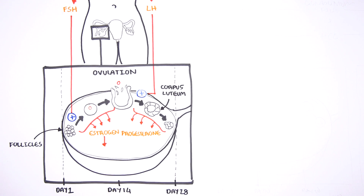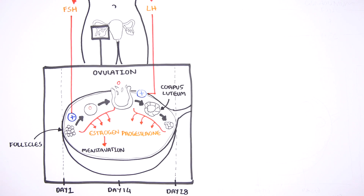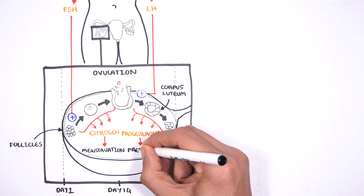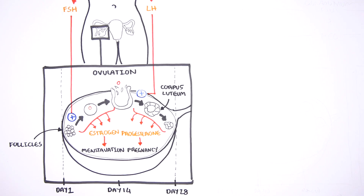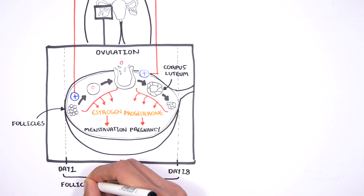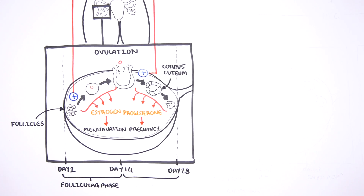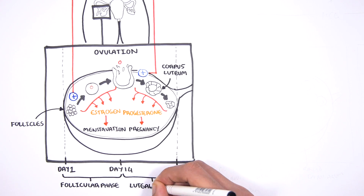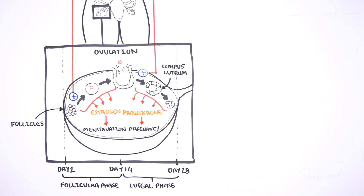Therefore, estrogen is important for the menstrual cycle, and progesterone is important for pregnancy. The female menstrual cycle is 28 days in duration and can be divided into two phases. Day 1 to 14 is the follicular phase, where there is follicular development producing estrogen. Following ovulation, days 14 to 28 is the luteal phase, where the corpus luteum slowly degenerates while releasing progesterone.